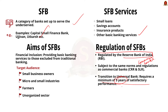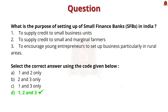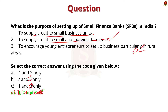Now let us solve the question. The first statement says the purpose of setting up a small finance bank is to supply credit to small business units — this is correct. The second statement says to supply credit to small and marginal farmers — this is also correct. The third statement says to encourage young entrepreneurs to set up business particularly in rural areas — this is incorrect, as there is no explicit provision for this. Eliminating the third statement, the answer is option A: one and two only.